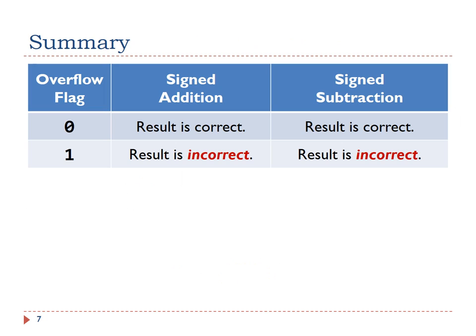This table shows the meaning of the overflow flag when ALU adds or subtracts two signed numbers. If the overflow flag is 0, the result of signed addition or signed subtraction is correct. However, if the overflow flag is 1, the result of signed addition or signed subtraction is incorrect.